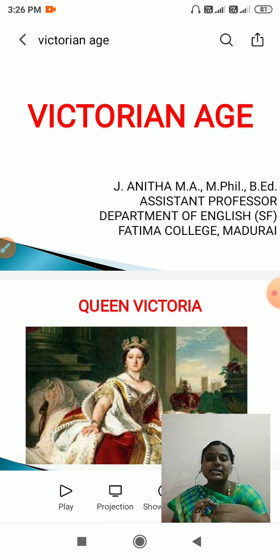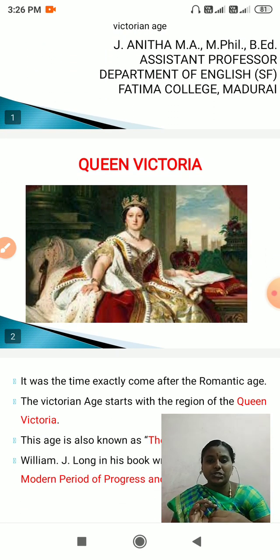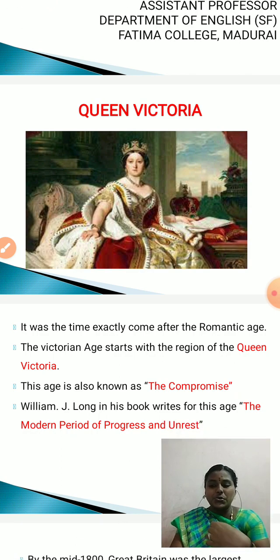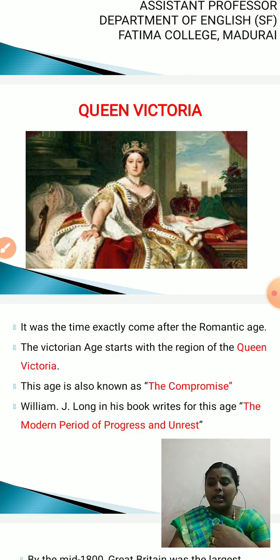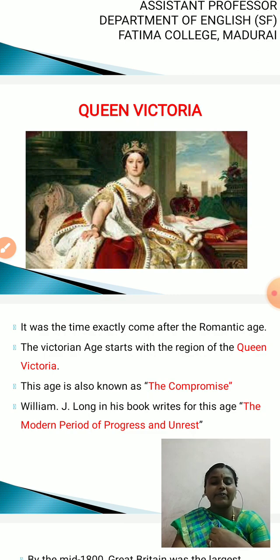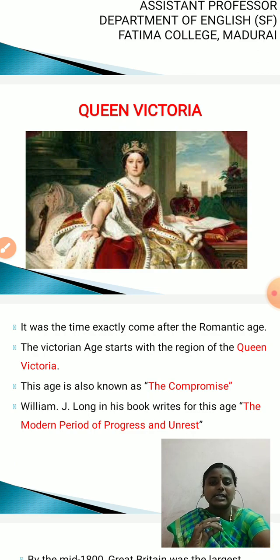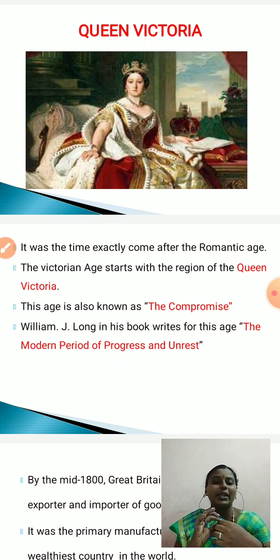The Victorian age is named after Queen Victoria. Queen Victoria became the Queen in 1837 at the age of 18 and ruled England for 68 years until her death in 1901. So the period from 1837 to 1901 is called the Victorian era. The Victorian age exactly comes after the Romantic age and starts with the reign of Queen Victoria.